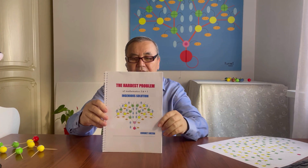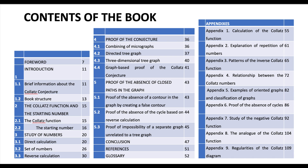Friends, details of the proof of the Collatz conjecture are given in the author's book, which is available for pre-order from Amazon. The layout of the book is as follows, and from the content it is clear that the book contains answers to many questions related to the Collatz conjecture.